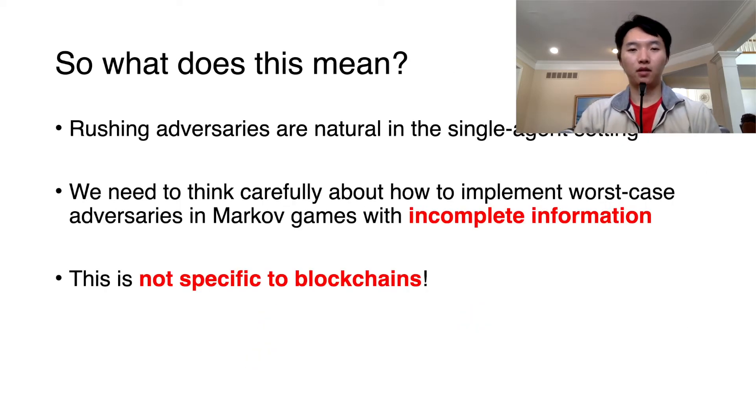What does this mean? We have to think carefully about how to implement worst-case adversaries when there are multiple agents with incomplete information. This observation is not limited to the blockchain setting.